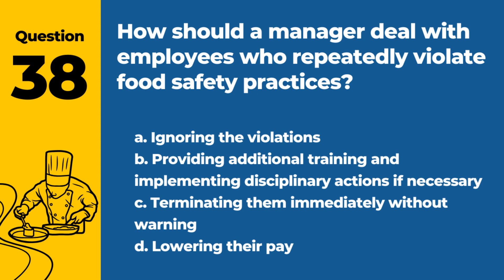Question 38. How should a manager deal with employees who repeatedly violate food safety practices? A. Ignoring the violations. B. Providing additional training and implementing disciplinary actions, if necessary. C. Terminating them immediately without warning. D. Lowering their pay. Answer: B. Dealing with repeat violations involves retraining and, if necessary, disciplinary measures to ensure compliance.